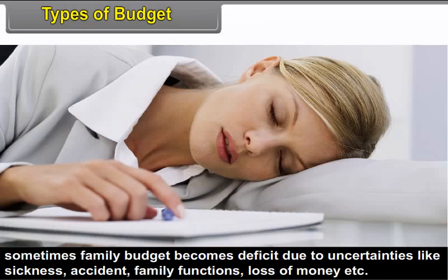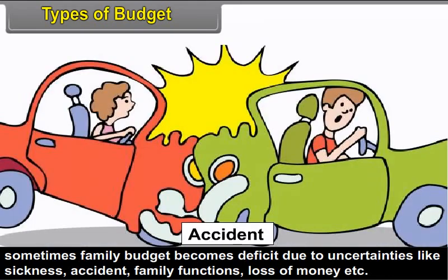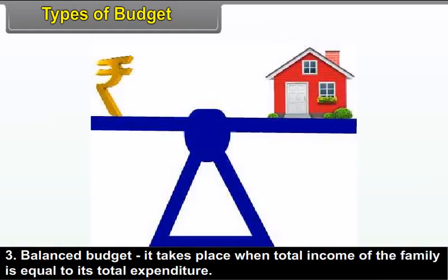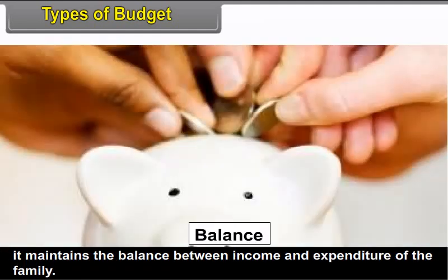Sometimes a family budget becomes deficit due to uncertainties like sickness, accident, family functions, loss of money, etc. Balanced budget takes place when the total income of the family is equal to its total expenditure. It maintains the balance between income and expenditure of the family.